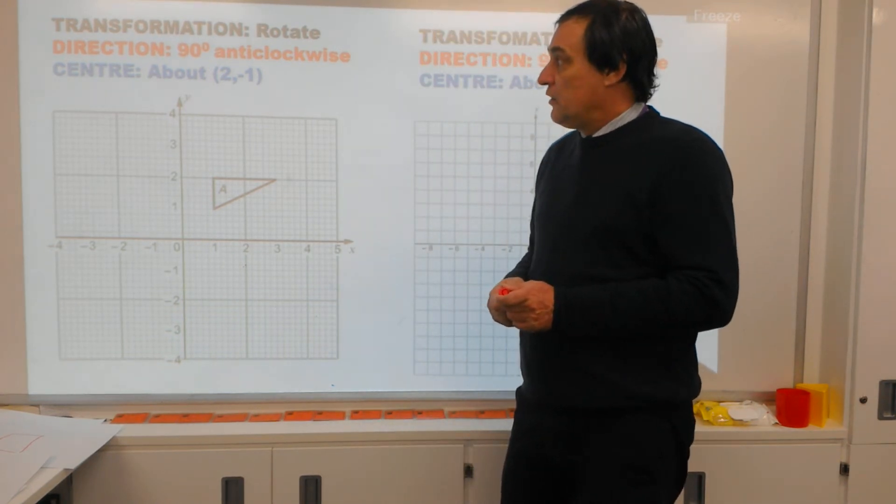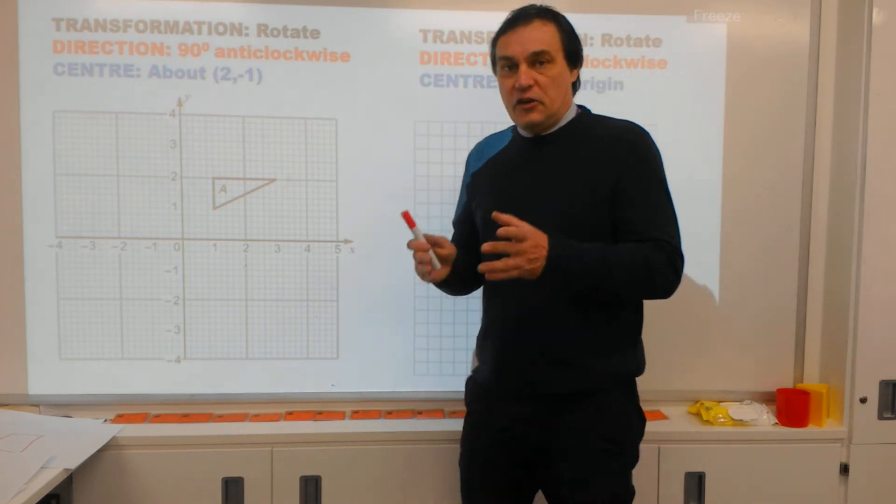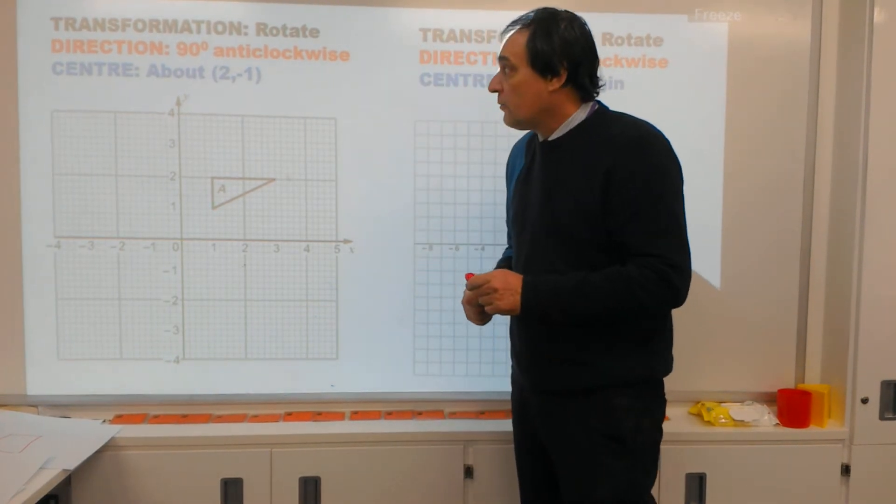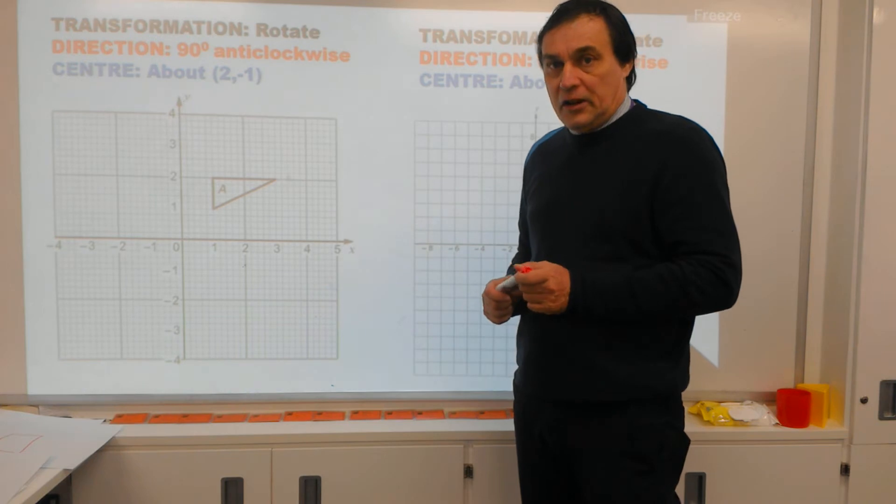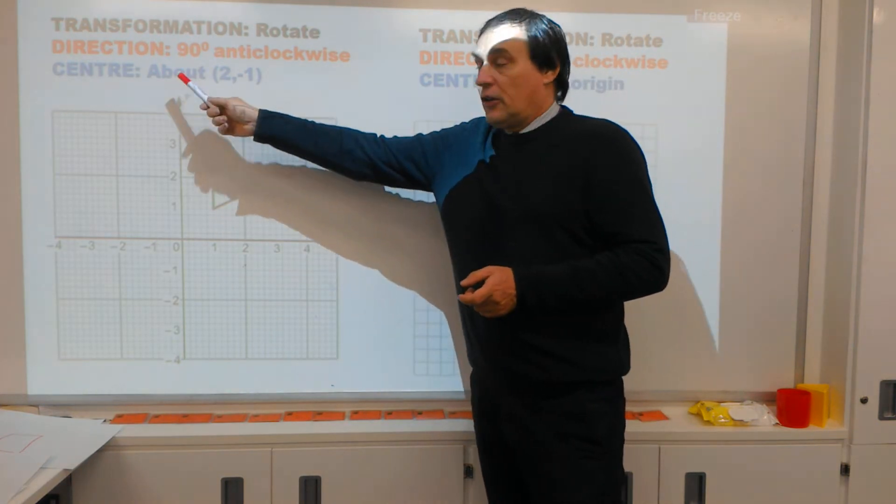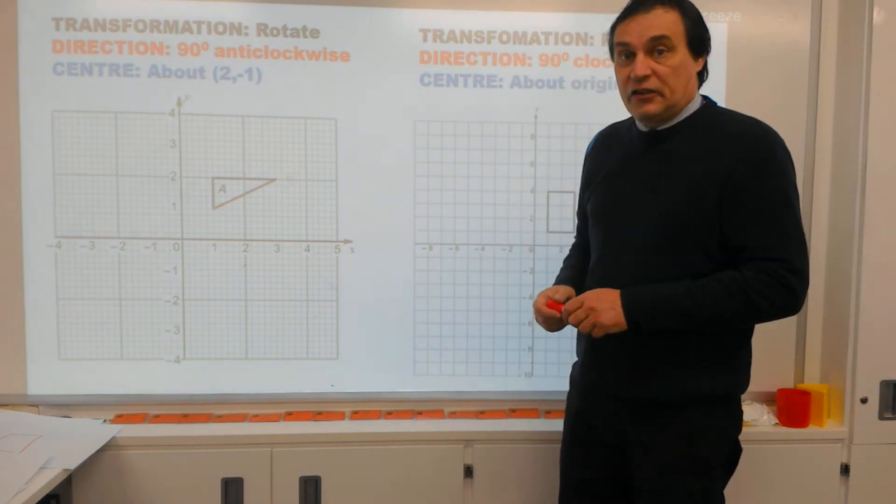And then the third piece of information is about the center of rotation. That's the point at which you rotate the shape around. Now you don't normally use the word center in a question. You'll normally get the word about. So if you see the word about, that means the center of rotation.